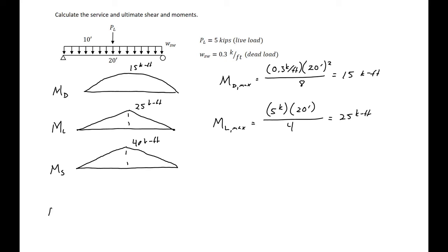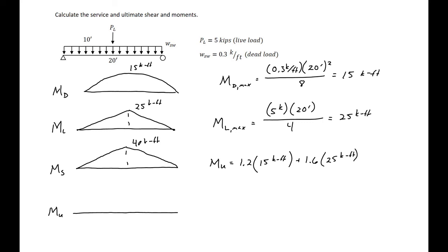For the ultimate moment, we factor our loads. MU at mid-span equals 1.2 times the dead load of 15 kip-feet plus 1.6 times the live load of 25 kip-feet, giving an MU of 58 kip-feet. The shape is again somewhere between the two component diagrams, with a magnitude of 58 kip-feet.